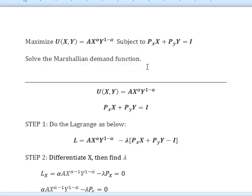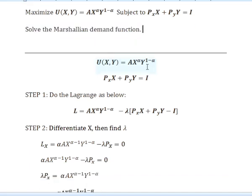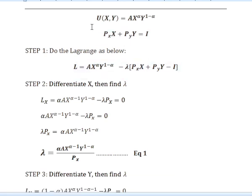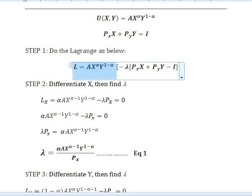So the utility function and consumer budget constraints are given as follows. The first thing we need to do is the Lagrangian — we rewrite the equation.